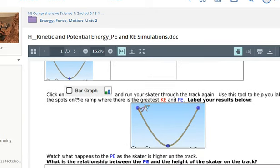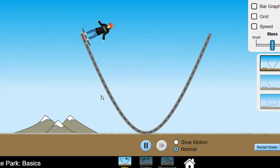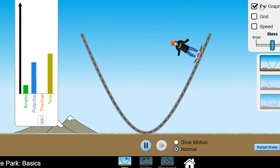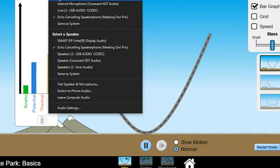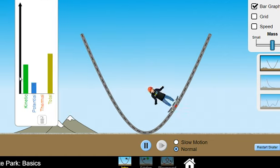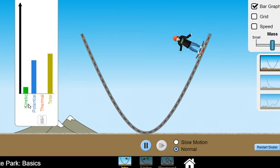Next, I'm going to click on the thing that says Bar Graph. Well, where can I find that on this screen? Oh, right up here where it says Bar Graph. I'm going to click on the bar graph. Now that I've clicked on the bar graph, I can see that I've got kinetic energy and potential energy, thermal energy and total energy. Okay, that's pretty cool. Now what?